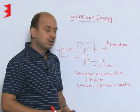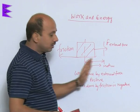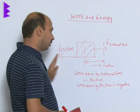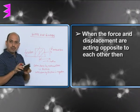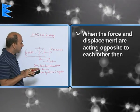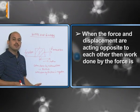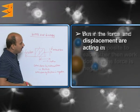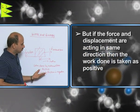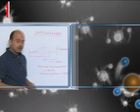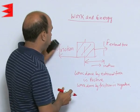When the force and displacement are acting opposite to each other, the work done by force is negative. If the force and displacement are in the same direction, work done by the force is taken as positive. Now, let us take another example.